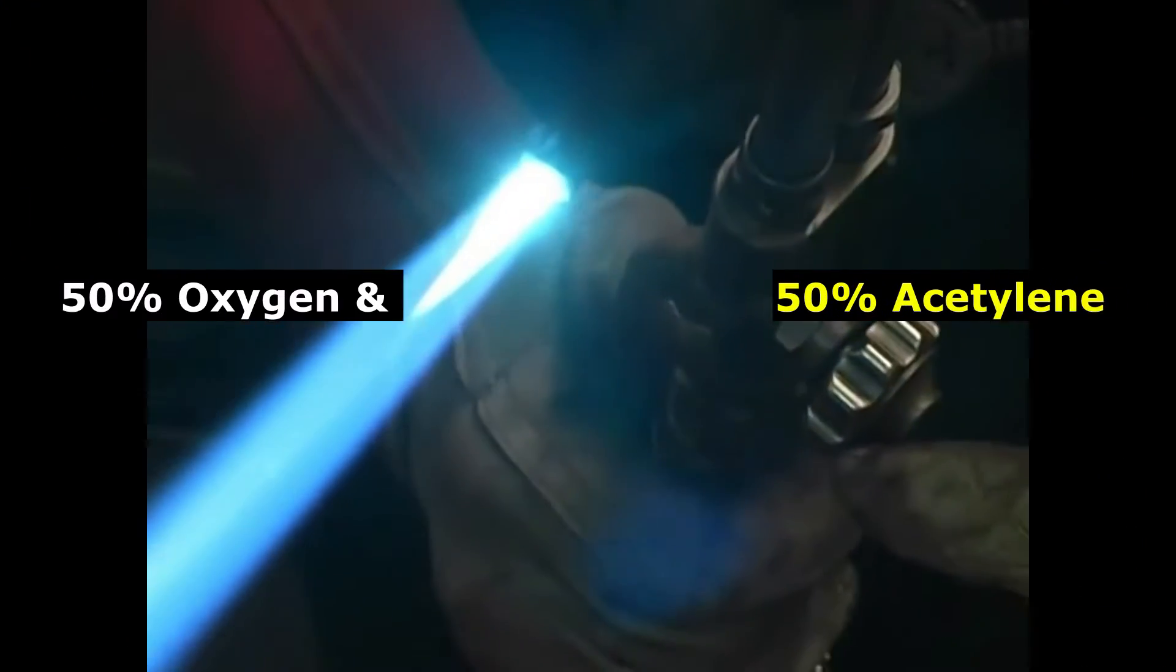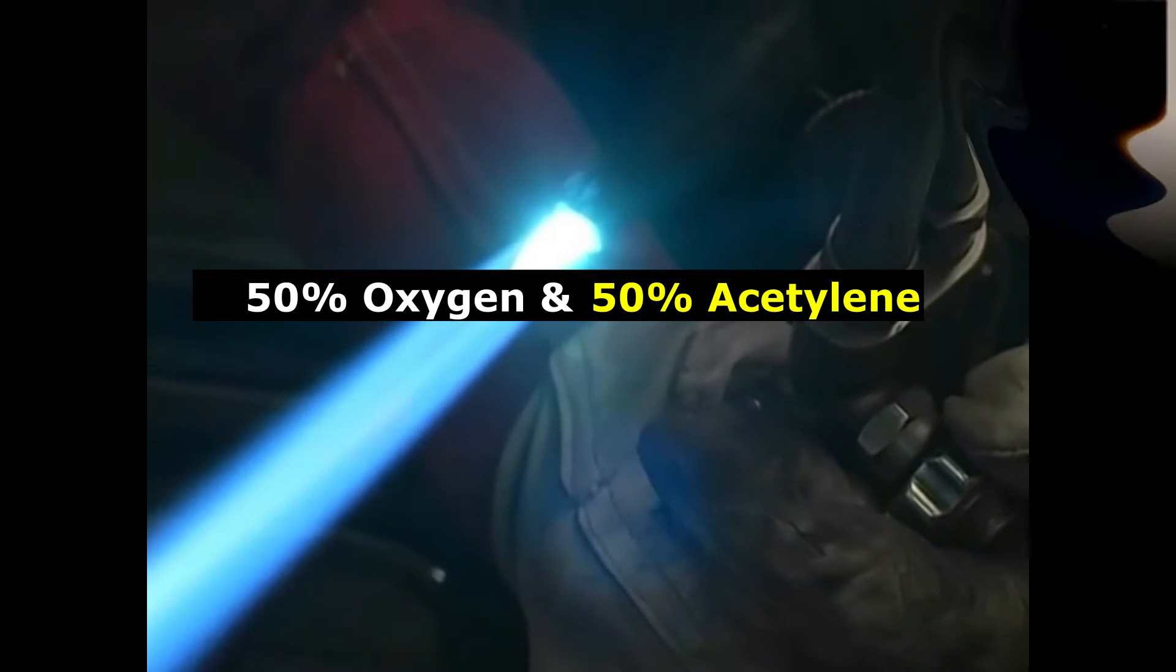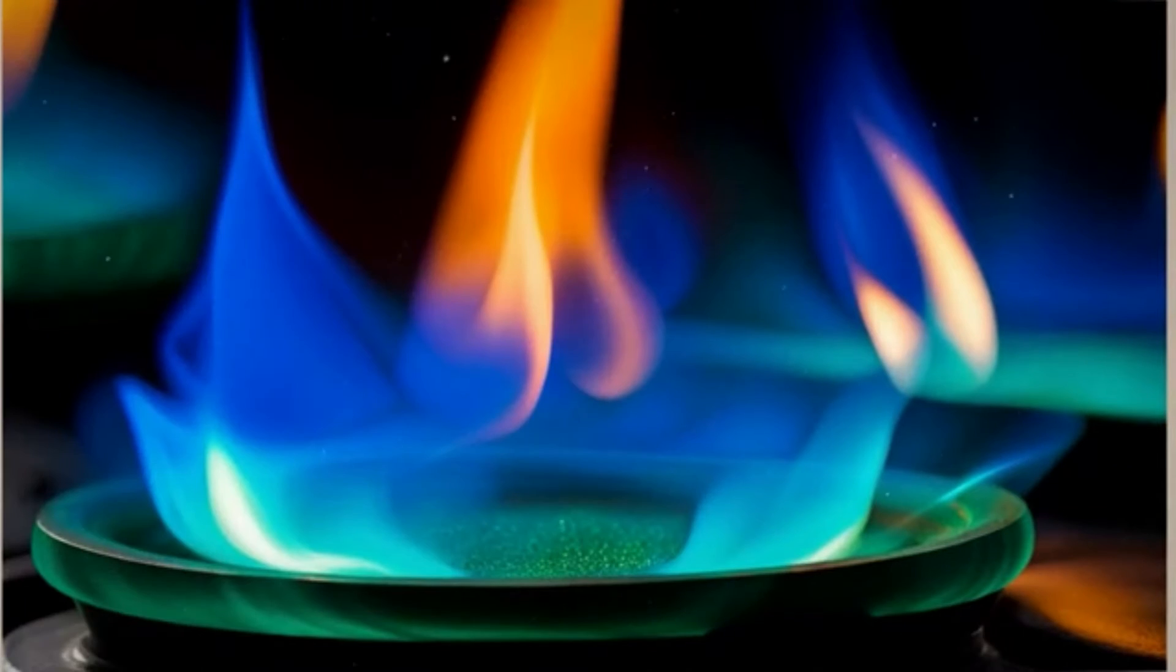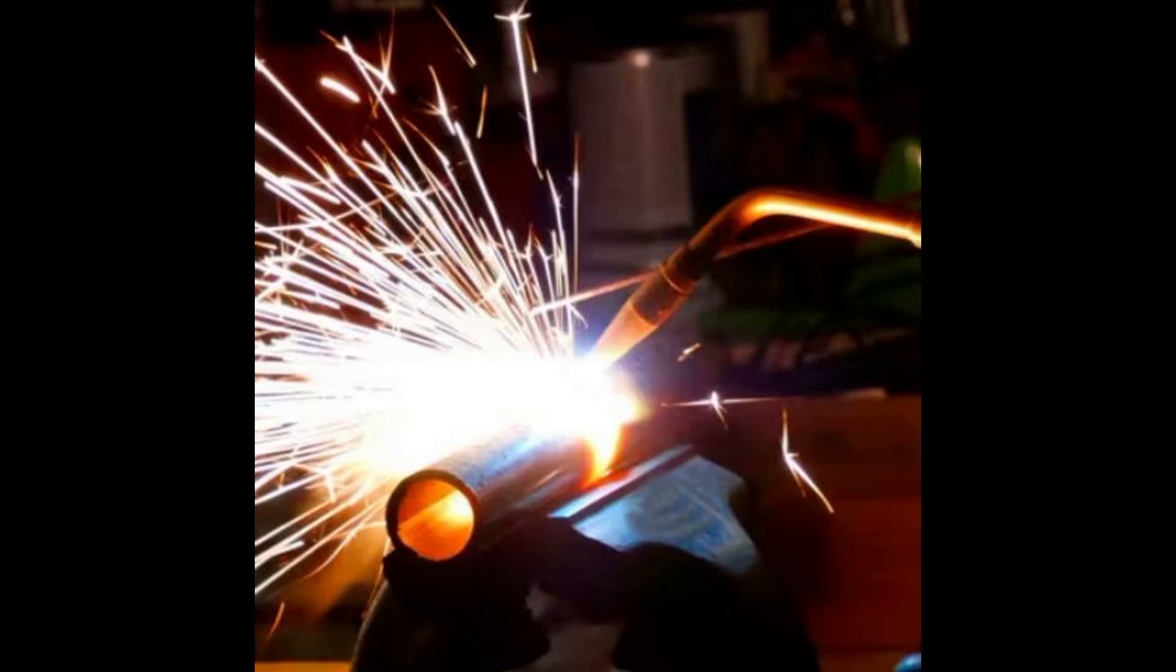A neutral flame is achieved when there are equal amounts of oxygen and acetylene. A neutral flame is so named because it has no chemical effect on the molten metal.